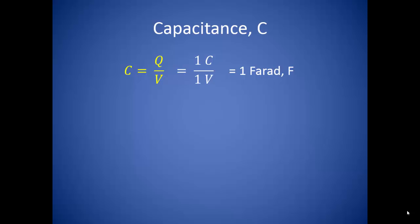Different capacitors will store a different amount of charge when the same voltage is applied, so this particular definition is somewhat misleading. If we just look at this equation, we would probably decide that if we apply more charge then the capacitance will increase, or if we increase the voltage then the capacitance will increase. But depending on the makeup of our capacitor, the maximum capacitance really doesn't change. The capacitance of any given capacitor is pretty constant.